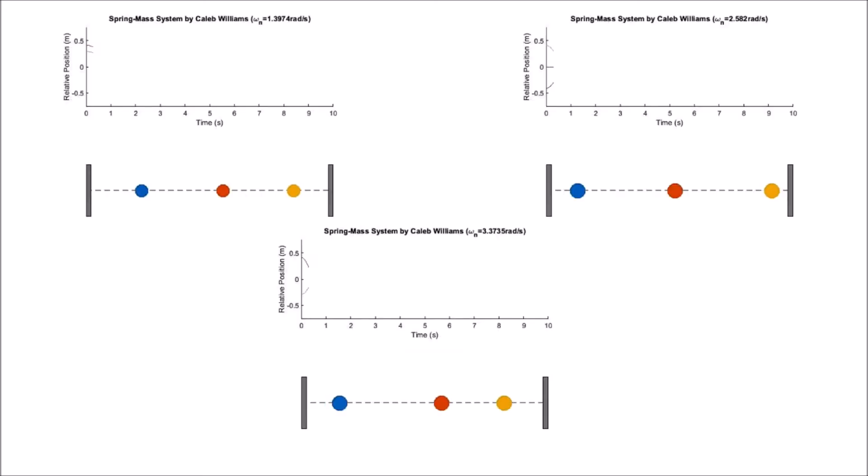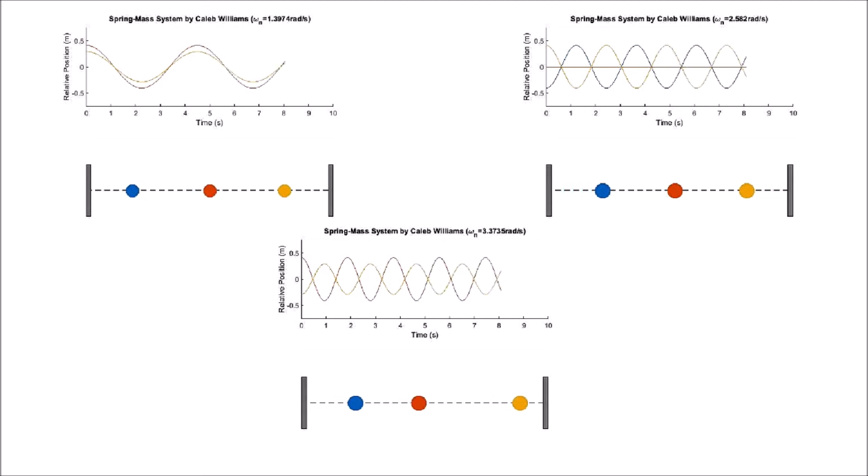For a three-mass system, we have in the first mode, all three masses moving in the same direction but at different rates. In the second mode, you have the middle mass stationary while the outer two masses move opposing each other. In the third mode, you have the outer two masses moving together at the same rate, while the inner mass moves opposing these outer two masses.